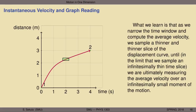As we narrow the time window and keep recomputing the average velocity in thinner and thinner slices, we sample thinner and thinner portions of the displacement curve. In the limit of an infinitesimally thin time slice, we measure the average velocity over an infinitesimally small moment — that's what instantaneous velocity means. It's impossible to measure at an exact instant even with the best instruments, so we adopt the concept of infinitesimally thin slices. This language applies equally to acceleration — changes in velocity with time — which is the concept we'll get to next.